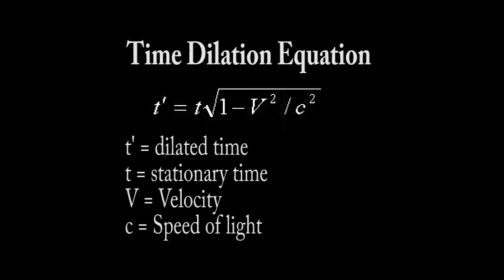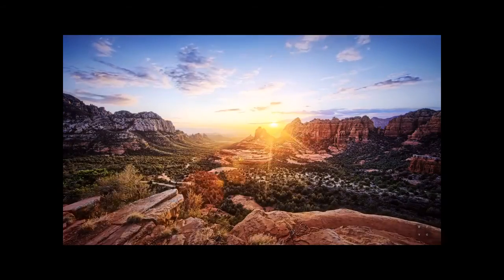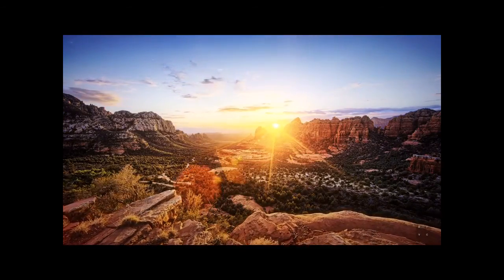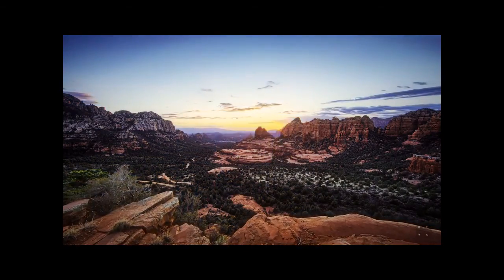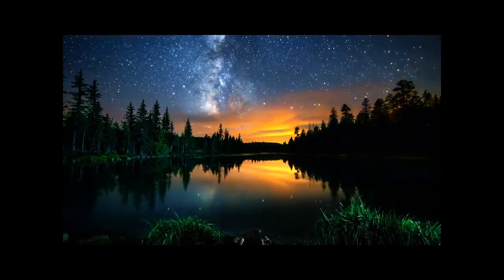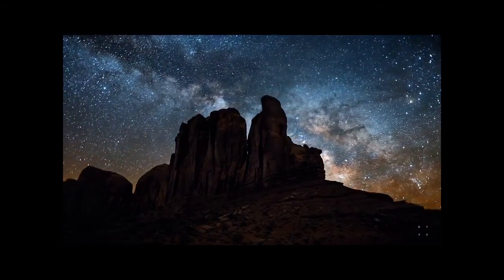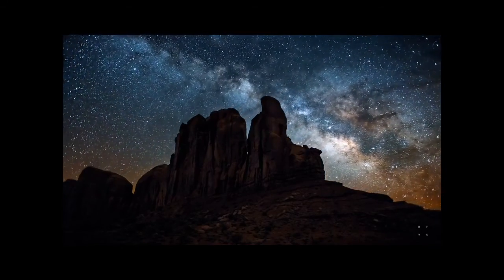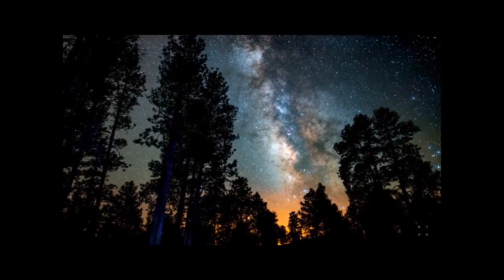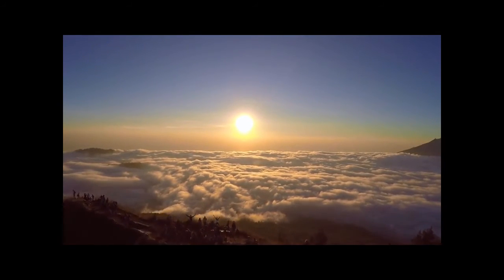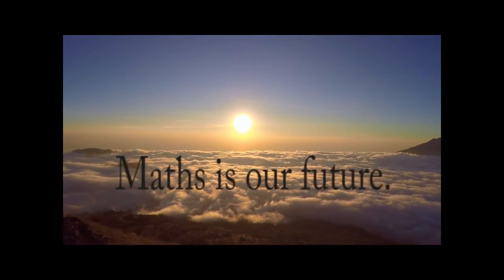The equation for time dilation is used to represent the difference of elapsed time between two events as measured by observers either moving relative to each other or differently situated from a gravitational mass or masses. Knowing that we only have an estimated 32 years and five months on Earth before the human capacity limit is reached, space is realistically our only option, our only hope, our only future. We can exploit our knowledge of mathematics and apply it to solving future global crises and wholeheartedly pursue space exploration. The only way in which we can further learn and discover about space is maths. Maths is our future.